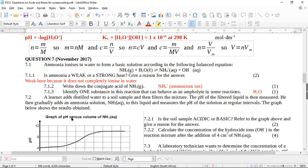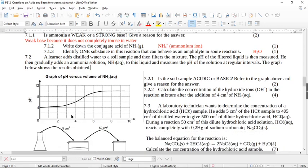Now, let's have a look. A learner adds distilled water to a soil sample. Let's move this up. Yeah, we should be fine here. A learner adds distilled water to a soil sample and then filters the mixture. The pH of the filtered liquid is then measured. He gradually adds an ammonia solution to this liquid and measures the pH of the solution at regular intervals. The graph below shows the results obtained.